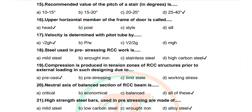Question 18: Steel used in RCC work is. Options: mild steel, wrought iron, stainless steel, high carbon steel. Correct answer is high carbon steel. Question 19: Compression is produced in tension zones of RCC structure prior to external loading in such design due to. Options: pre-cast, pre-stressing, limit state, working stress. Correct answer is pre-stressing.